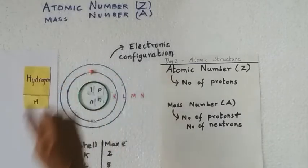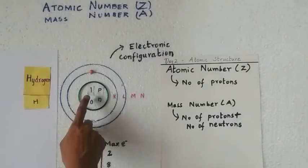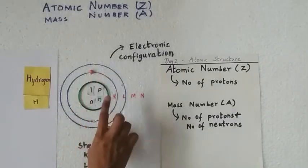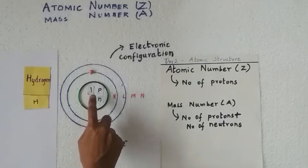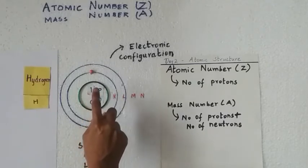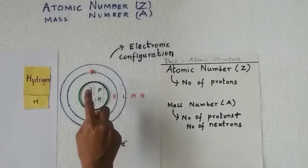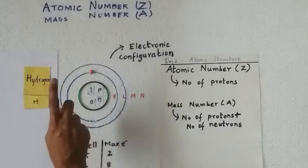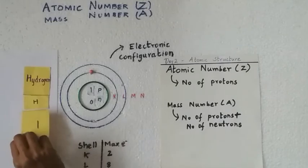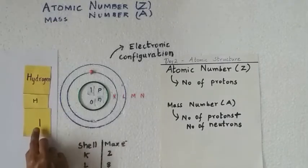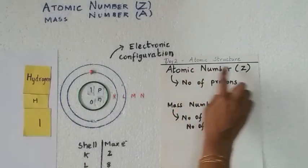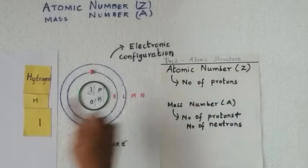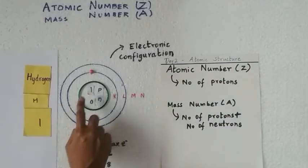Since hydrogen has only one proton, I have represented the electron with an orange bead. The atomic number is the term we are learning now. The atomic number is given by the number of protons present in the nucleus. Hydrogen has one proton, so the atomic number is 1, represented by the symbol Z.